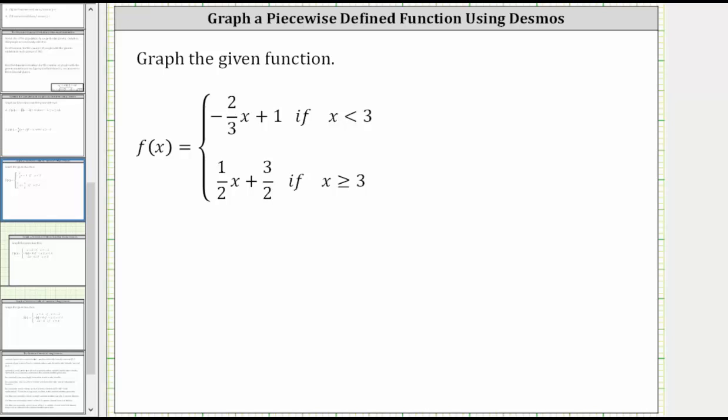This lesson will show how to use desmos.com to graph a piecewise defined function. We are given f(x) equals negative 2/3x plus one if x is less than three, and f(x) equals 1½x plus 3½ if x is greater than or equal to three.